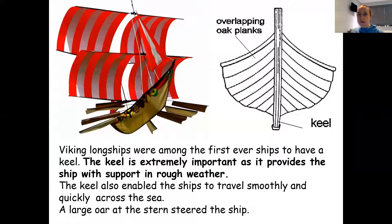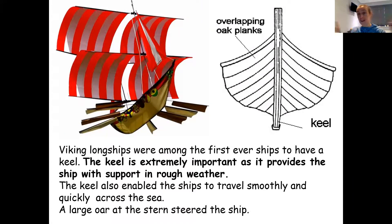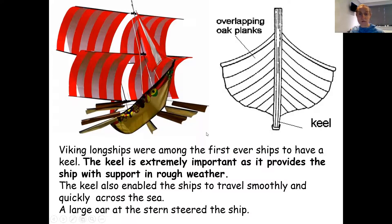They were some of the first ships to have a keel. The keel is the bit at the bottom of the ship that you don't normally see once it's in the water, but it helps to support the boat over rough waves. These Vikings were sailing over the oceans and a storm could come up with water and rain lashing over the top, but their boat would stay steady. Can you imagine what it must have been like to be on a Viking ship? There wasn't really anywhere to shelter with all those people in one space. The keel enabled the boat to go smoothly, and they had one large oar at the back to help steer the ship.